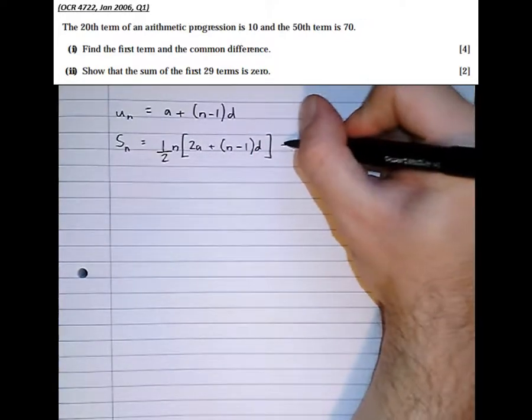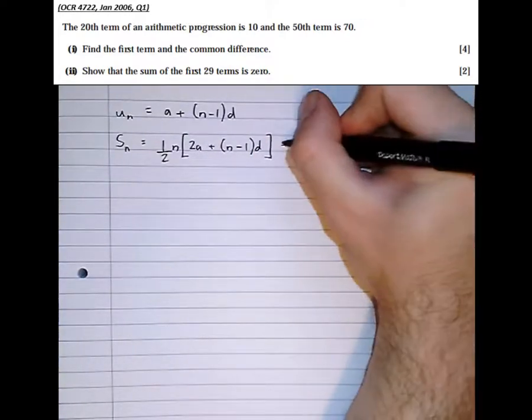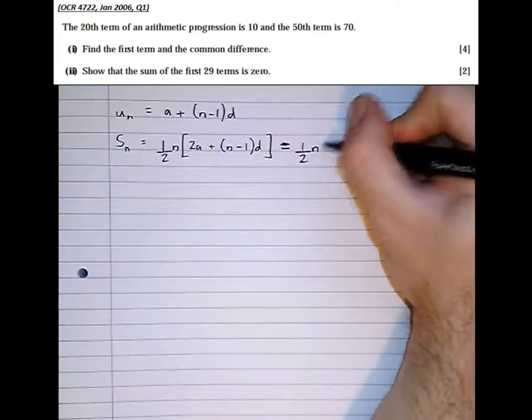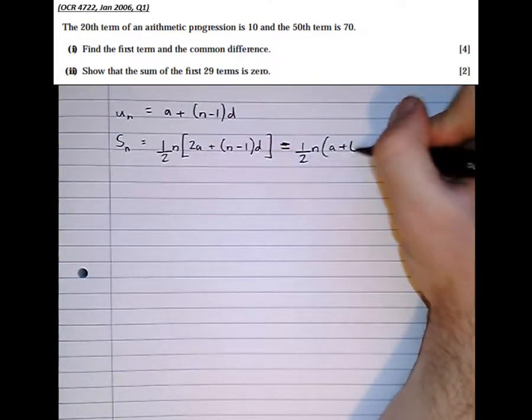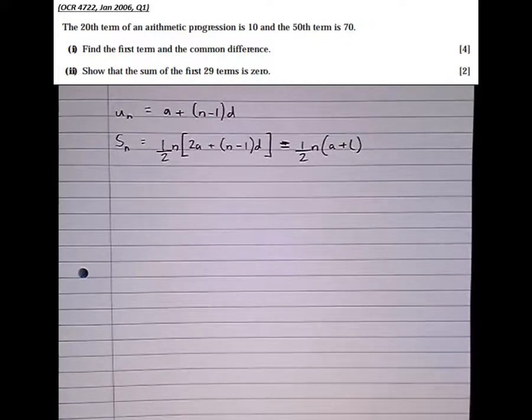Or an alternative formula, a half n equals a half n times (a plus l). Right, so looking at the information we're given in the question,